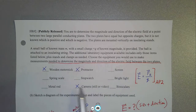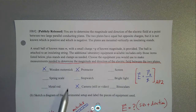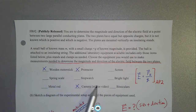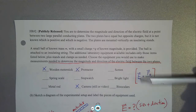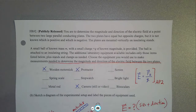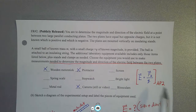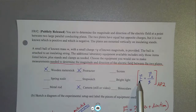They give you things like a meter stick, a spring scale, a metal rod, a camera, a stopwatch, a protractor, etc. You can see these right here. And we have to figure out the size of the electric field between two parallel plates.